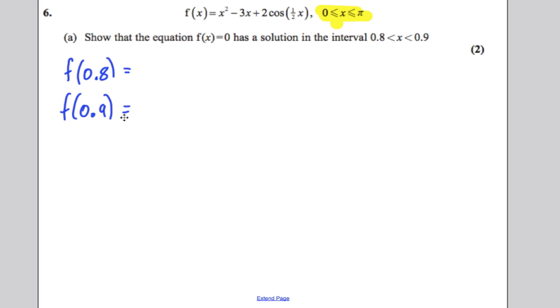Now you can do that using the calculator facility. You could type in your calculator x squared subtract 3x plus 2 cos of a half x. Press calculate button on your calculator and put in 0.8 and you get yourself 0.08, and you press the calculator function again and go 0.9 and you get yourself negative 0.09.